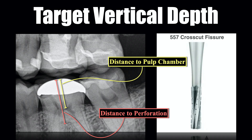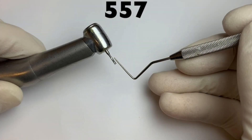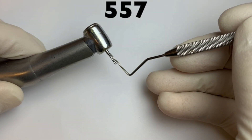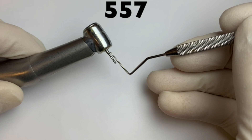On the 5-57 crosscut Fisher bur, the cutting flutes equate to 4 millimeters. As you reach the beveled portion and the shank parallels out, that's 7 millimeters. These are fixed dimensions and they act as a depth gauge during root canal access preparation. This information coupled with my target estimated depths allows me to stay on track and avoid perforation.